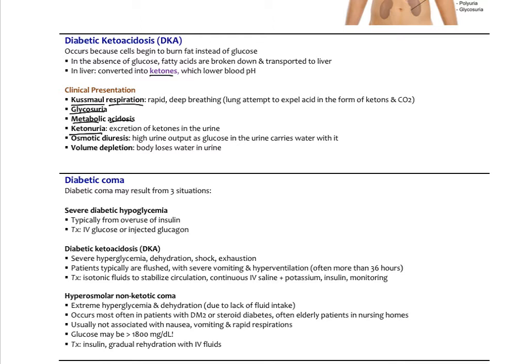Osmotic diuresis causes frequent urination, severe dehydration, and volume depletion — we won't see edema in ketoacidosis, we'll see dehydration and tissue wasting. This is quite severe because it can progress into a diabetic coma. DKA is one of the things that can cause a diabetic coma. Patients often lose consciousness or become very disoriented and are rushed to the emergency room, where they receive isotonic fluids with continuous IV saline, potassium, and insulin, and are monitored.